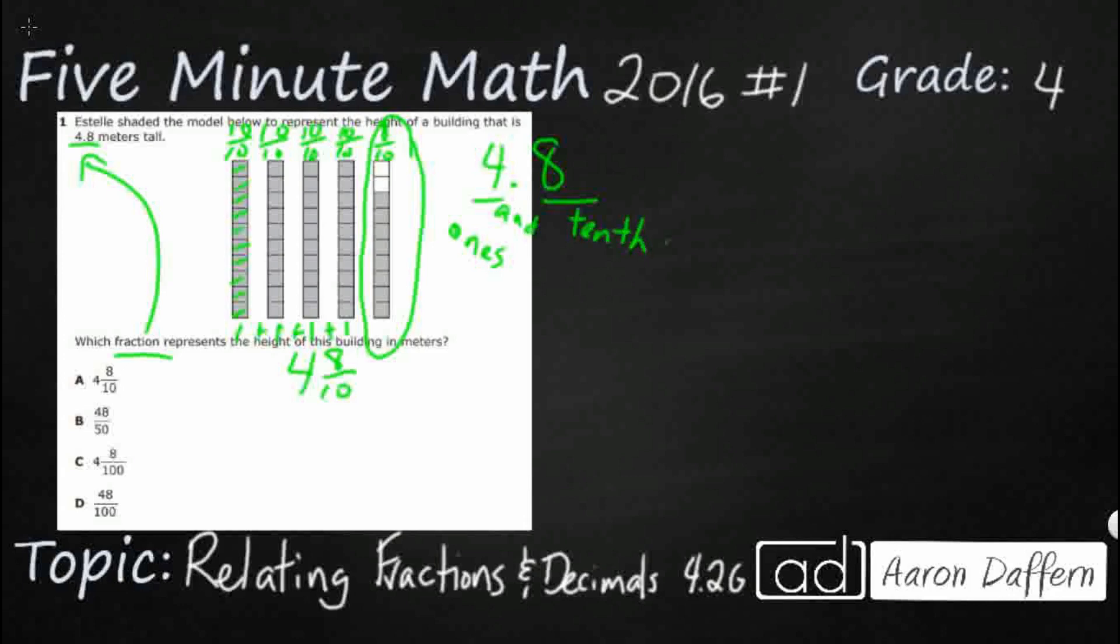Here's the key right here. This is 8 tenths. So, 4 and 8, and then you say the name of the place value location, and that is the tenths. So this is 4 and 8 tenths. This is 4 and 8 tenths.